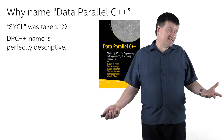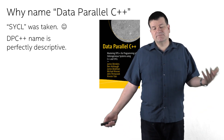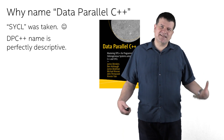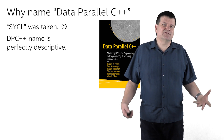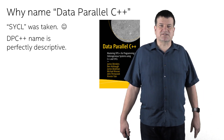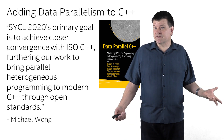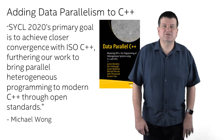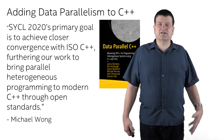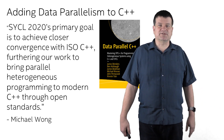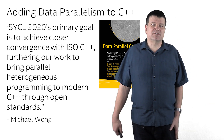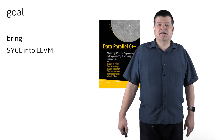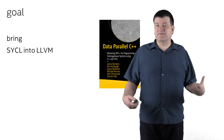I considered calling this my top 10 reasons DPC++ was named DPC++, but it turns out there really are only two reasons, and they're complementary. First of all, the name SYCL was taken. Secondly, Data Parallel C++ is a name that perfectly describes the project. LLVM is the best place to support SYCL, and we know that adding data parallelism support to C++ is the goal of SYCL. Michael Wong, the SYCL working group chair, summed it up by saying SYCL 2020's primary goal is to achieve closer convergence with ISO C++, furthering our work to bring parallel heterogeneous programming to modern C++ through open standards. So what better name for an LLVM implementation than Data Parallel C++? Many users find comfort in the emphasis on C++, and the goal of DPC++ is to bring full SYCL into LLVM.